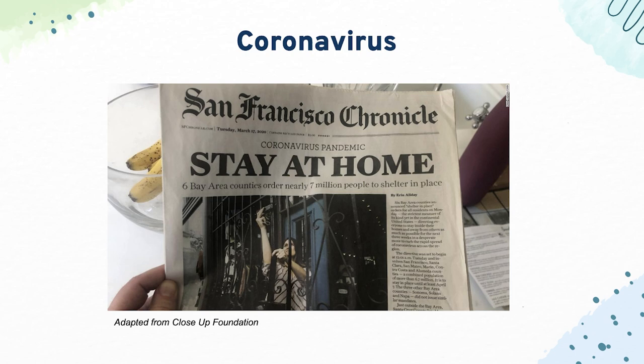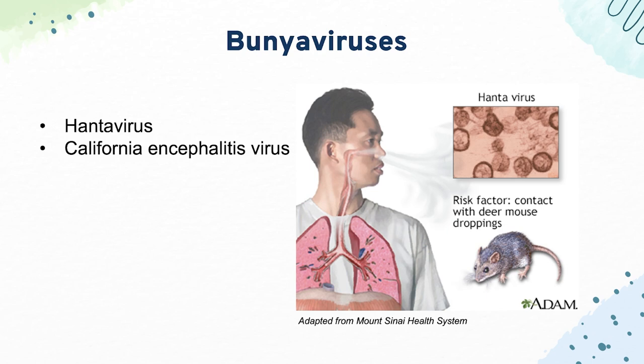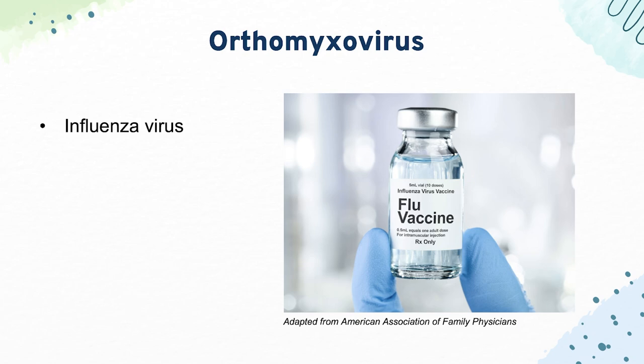Bunyaviruses include Hantavirus and California encephalitis virus. Both cause hemorrhagic fever or pneumonia, and the main risk factor is contact with mouse droppings or rodents. For the orthomyxoviruses, the main one to know is influenza — it's an enveloped virus and it's segmented. Know about genetic shift versus drift and all the surface proteins.